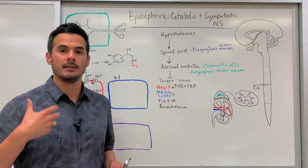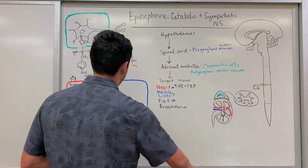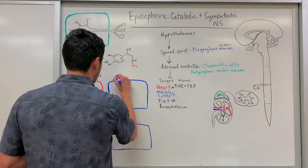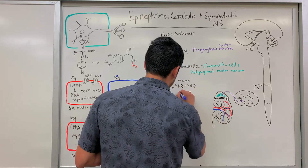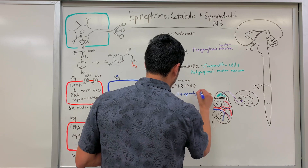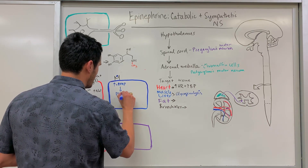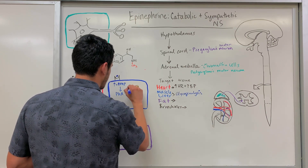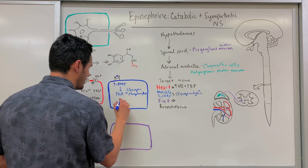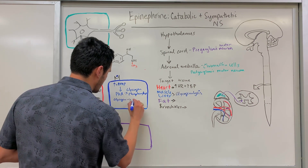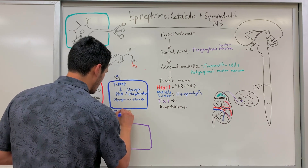Now for muscle and liver: epinephrine binds to its receptor and the overall goal is to increase blood glucose levels via glycogenolysis — breaking down glycogen into glucose. We do the same thing: increase cyclic AMP, activate protein kinase A, which then activates glycogen phosphorylase, an enzyme that breaks down glycogen into glucose, increasing blood glucose levels within the muscle and liver.